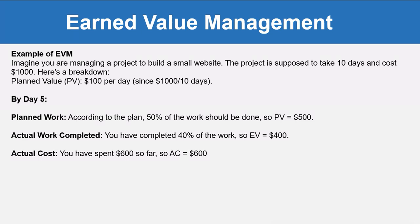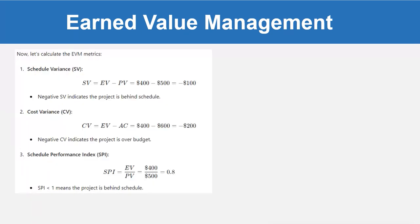Assume that you are standing on day five out of the total 10 days. According to the plan, 50% of the work should be done, so PV equals $500. However, actual work completed is only 40%, so EV equals $400. The actual cost you have spent so far is $600, so AC equals $600. Now let's calculate the EVM metrics.